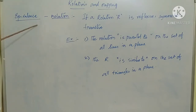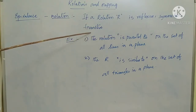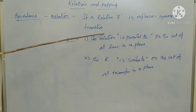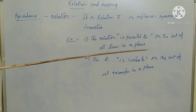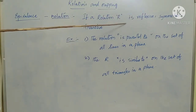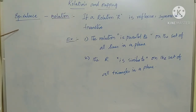The next relation is the equivalence relation. If a relation R is reflexive, symmetric, and transitive, then that type of relation is called an equivalence relation. For example, the relation 'is parallel to' on the set of all lines in a plane is reflexive, symmetric, and transitive, so we can call it an equivalence relation.